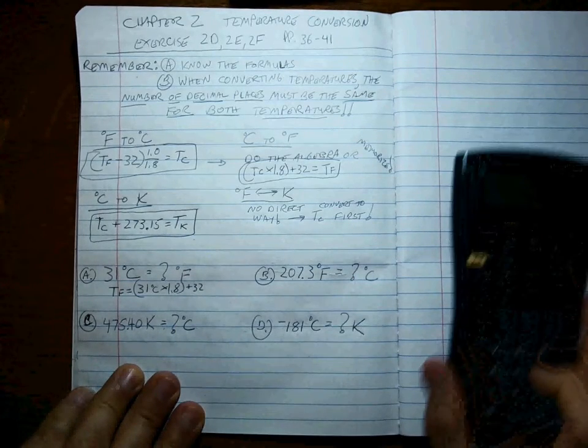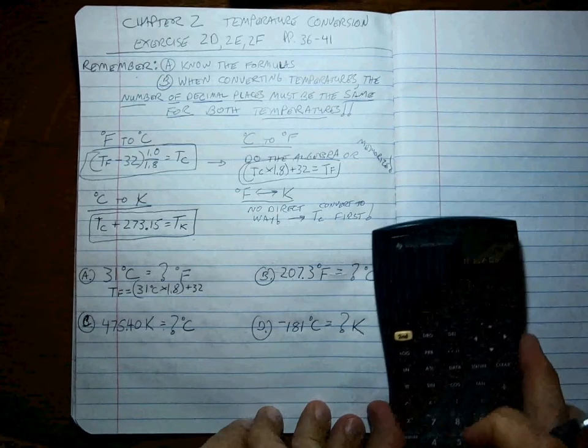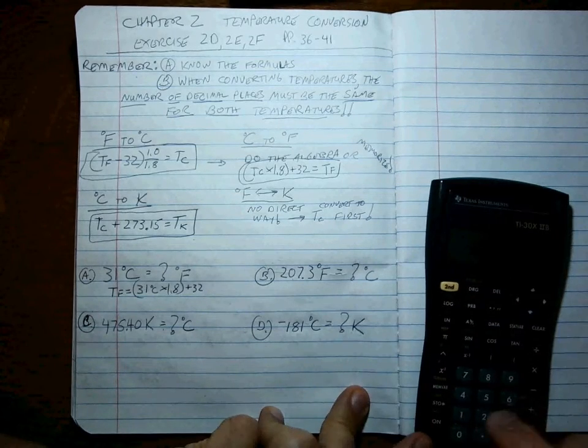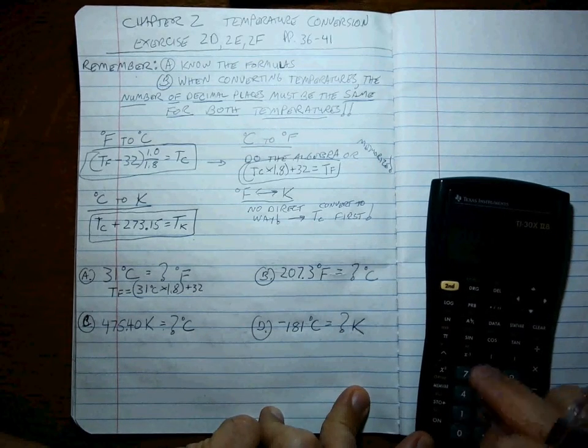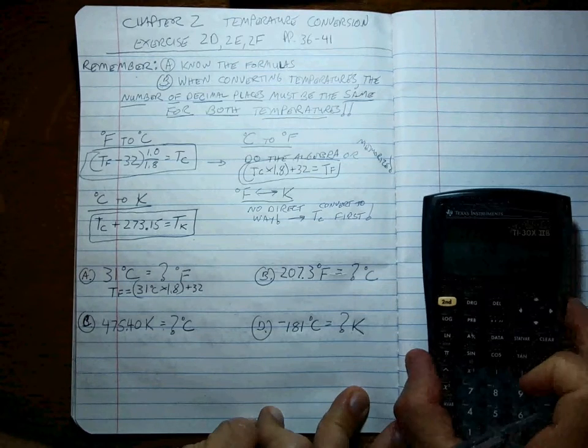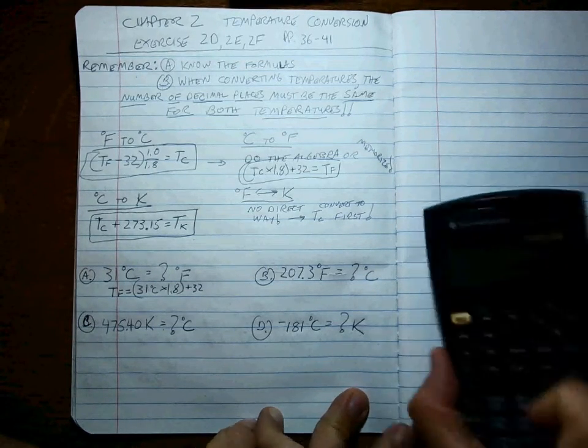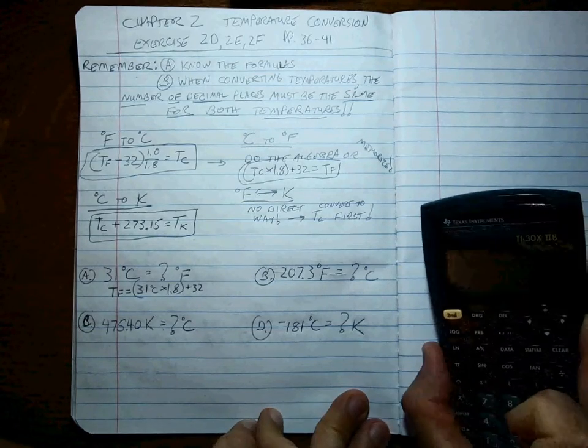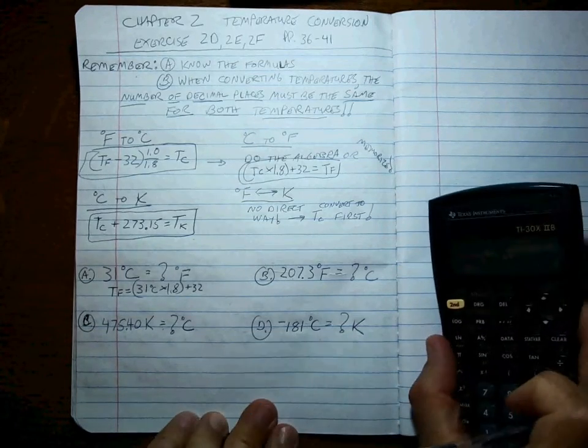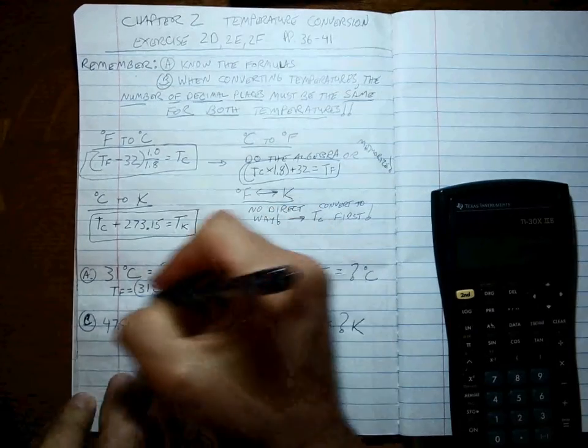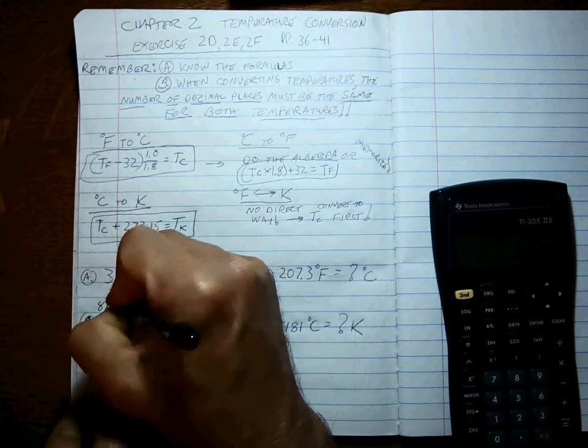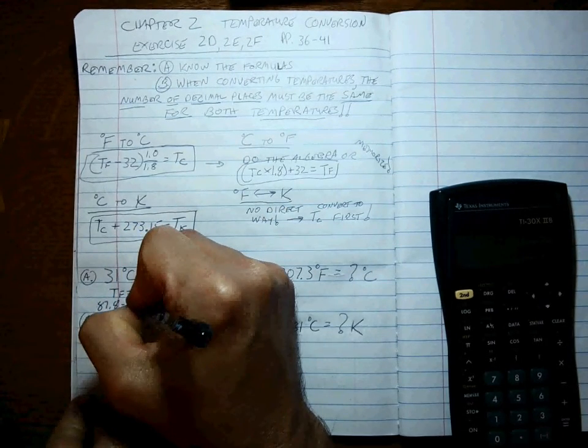So when we punch that into the calculator, that's 31 times 1.8 is equal to that, and then we add 32 to it, and we get 87.8 is what the calculator says.